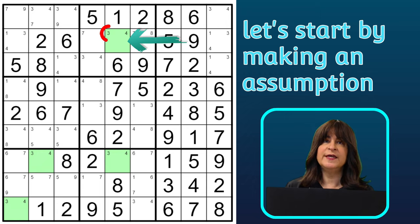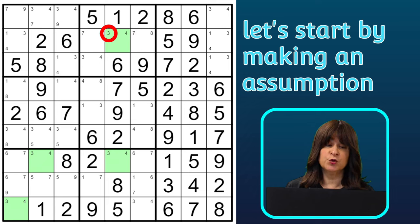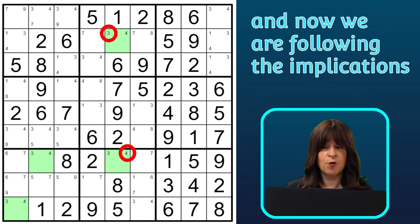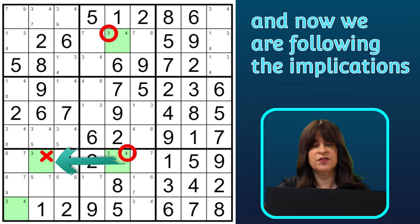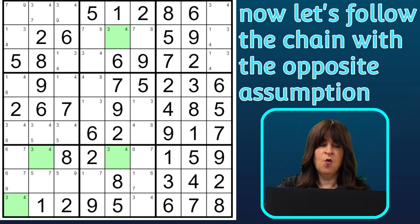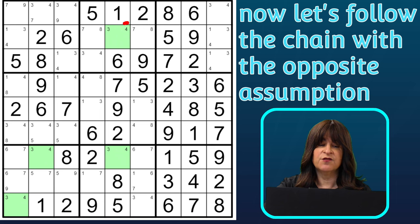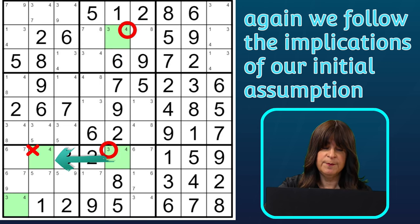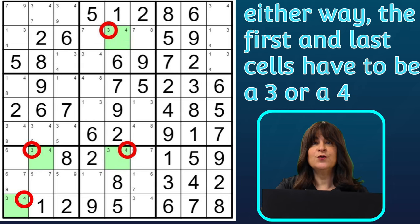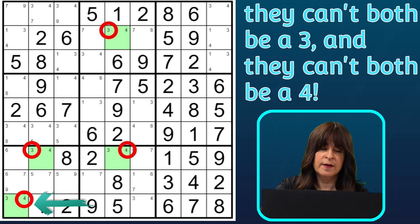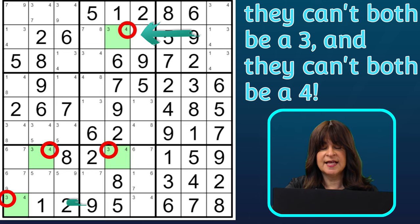Let's start with the candidate 3 in row B, column 5, and make the assumption that it is true. If this 3 is true, then this 3 in the same column can't also be true, so it must be the 4. Then this can't be a 4, so it must be the 3. And then this would have to be the 4 — you see how they alternate between 3 and 4. Or, we can make a different assumption and start with the candidate 4 in row B, column 5. If this cell is a 4, then this 4 in the same column can't be true, so it must be a 3. Then this can't be a 3, so it must be a 4, and then this would have to be the 3. So either way, if this first cell is a 3 then the last cell has to be the 4, and if this first cell is a 4 then the last cell has to be a 3.